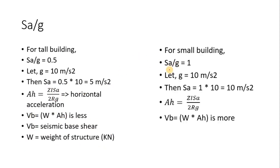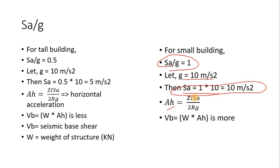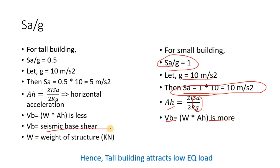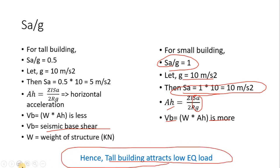For the small building: Sa/g = 1, g = 10, so Sa = 10. Since Sa/g is more, Ah will be more, and therefore VB will be more. Hence, the tall building attracts a lower earthquake load.